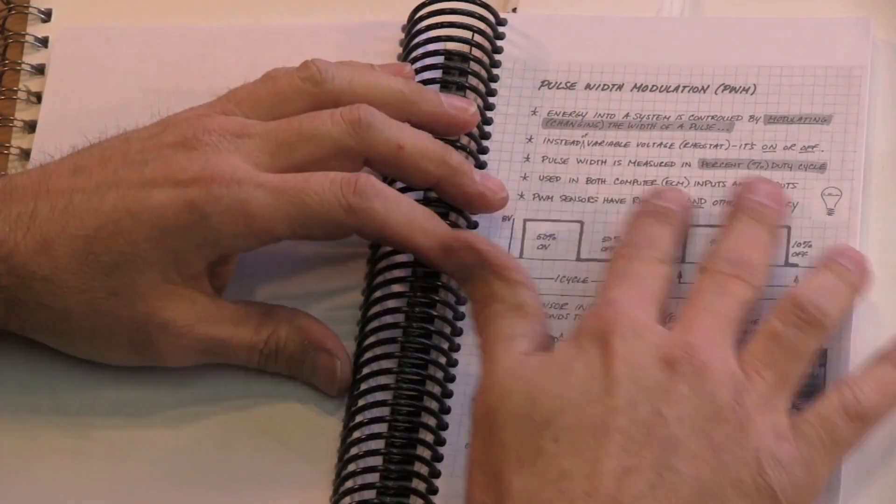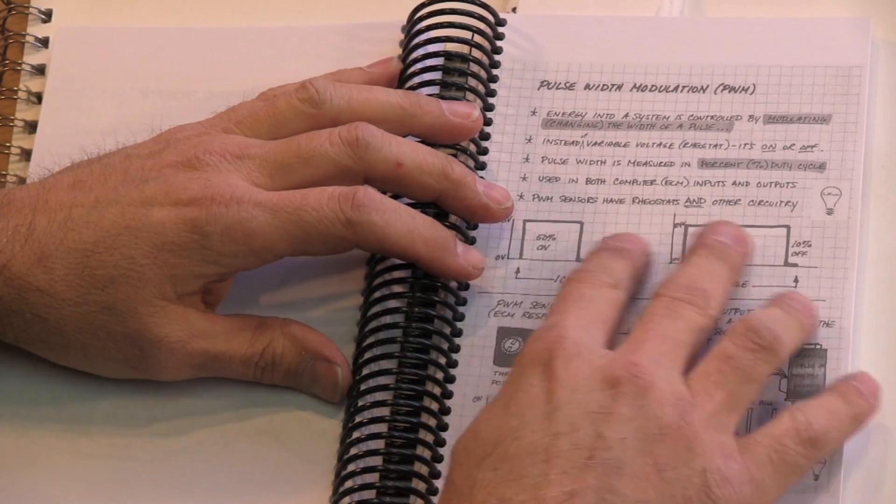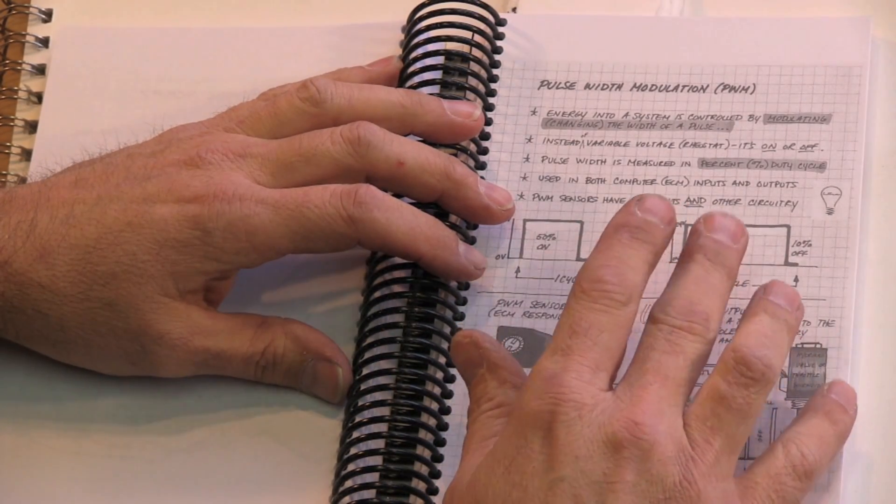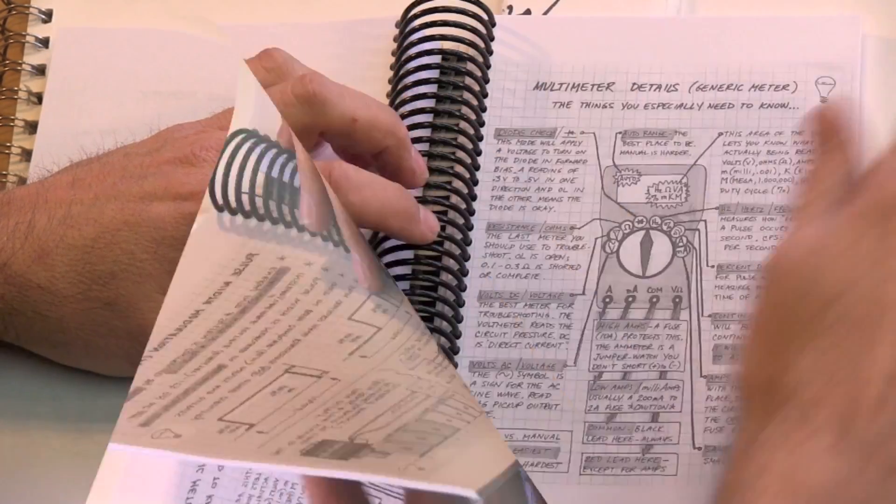Pulse Width Modulation, senders and sensors, inputs and outputs for PWM. Multiplexing, PLCs, a lot of information on that.